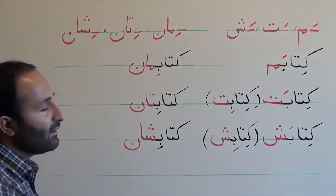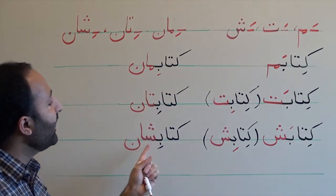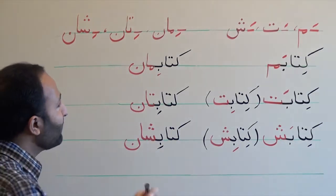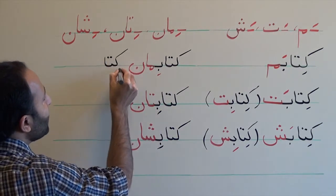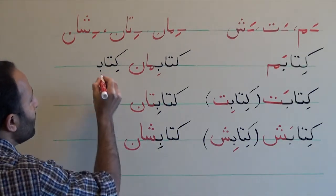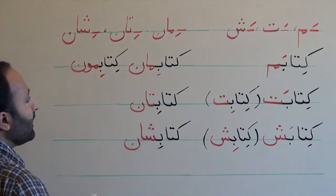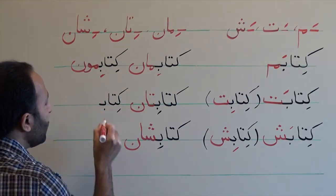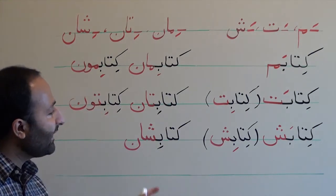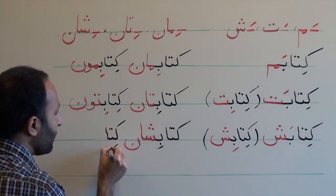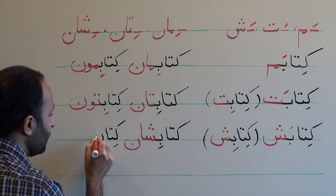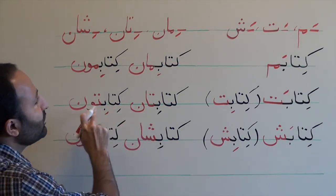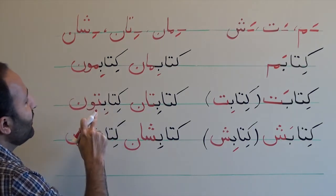For the plural endings, in written form they are '-man,' '-tan,' and '-shan.' In spoken form, the '-an' ending changes to '-un.' So 'ketab-man' changes to 'ketab-moon'; 'ketab-tan' changes to 'ketab-tun'; and 'ketab-shan' changes to 'ketab-shun' — meaning our book, your book, and their book respectively.